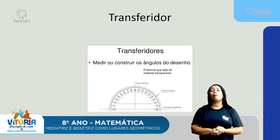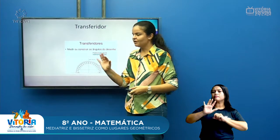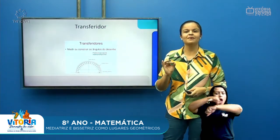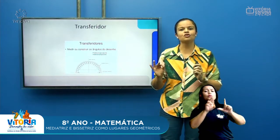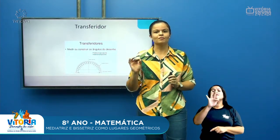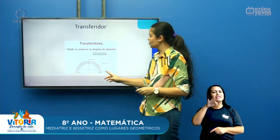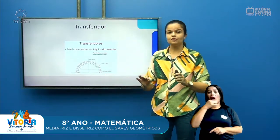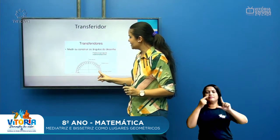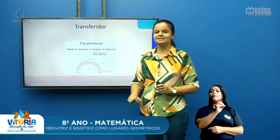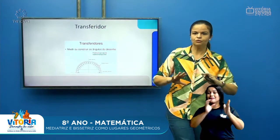Eu trouxe aqui para vocês uma imagem de uma régua onde essa régua serve para medir os ângulos. O nome dessa régua é transferidor. Nós chamamos de transferidor. E esse transferidor aqui, nós temos todos os ângulos, vai do zero até 180. Então, eu tenho todos os ângulos.